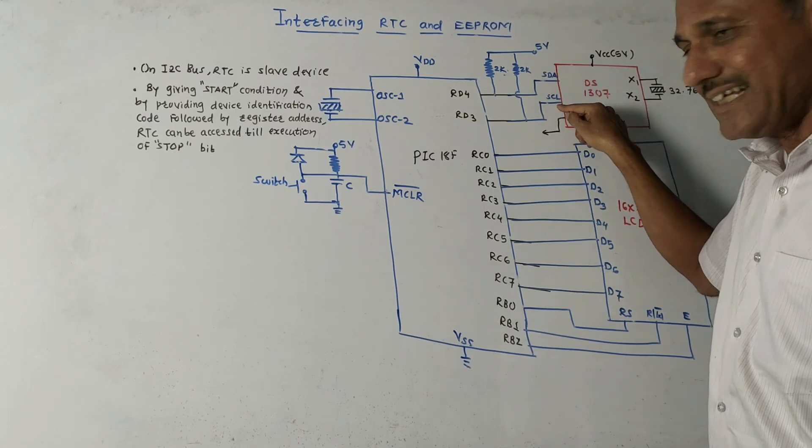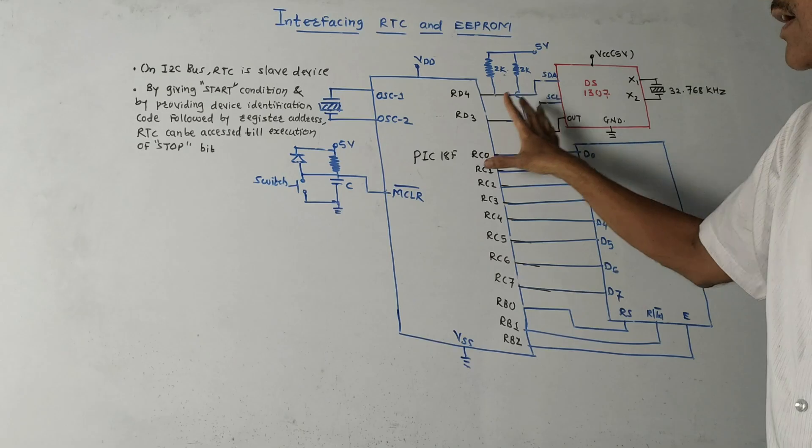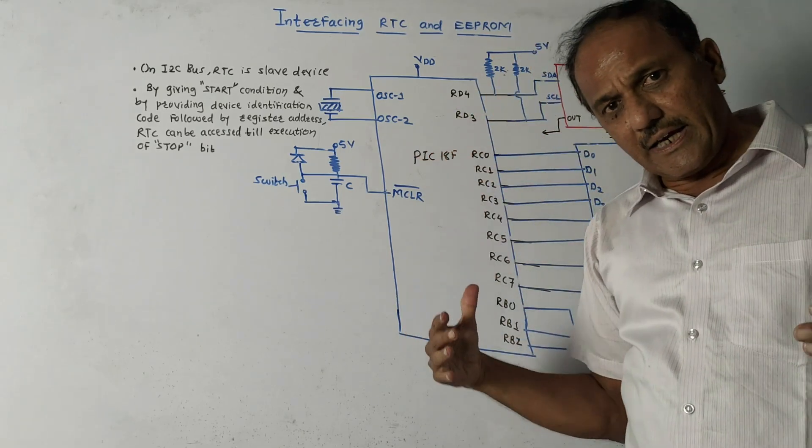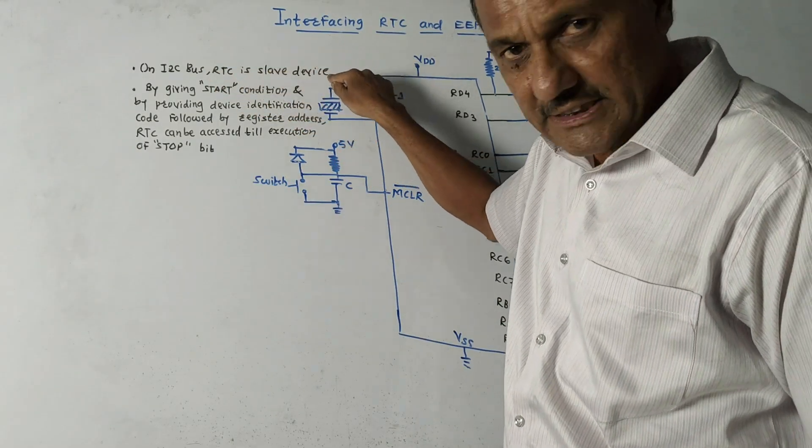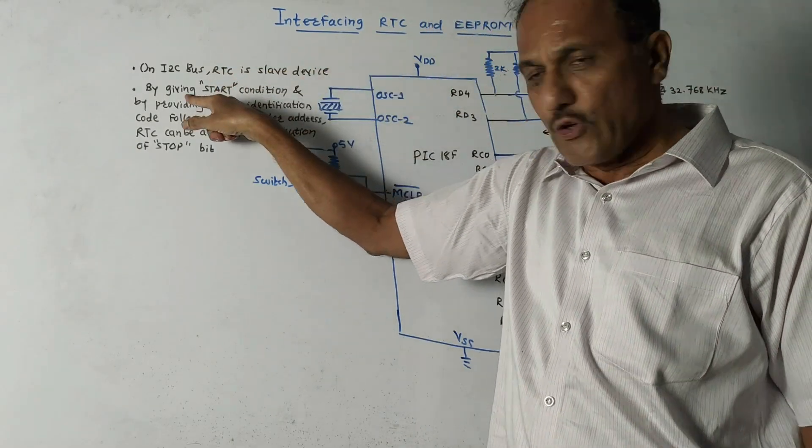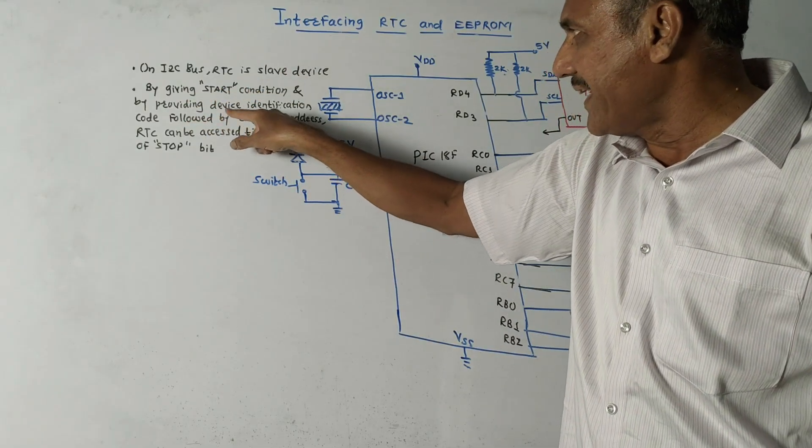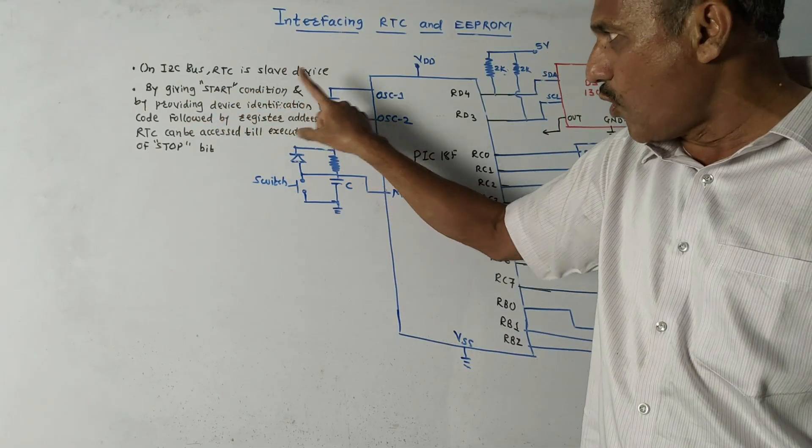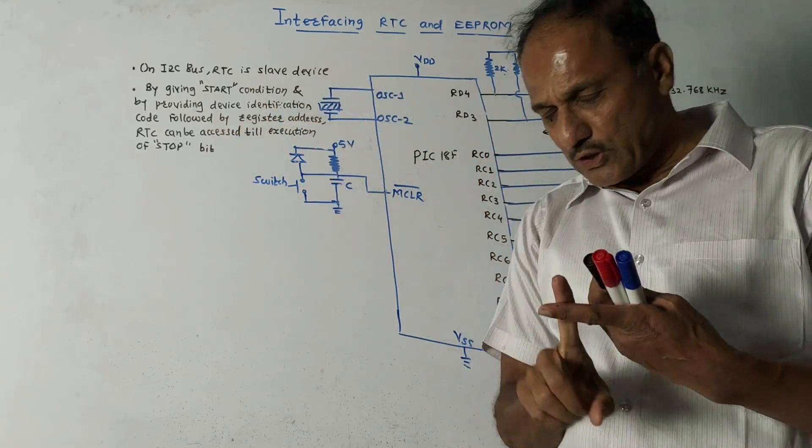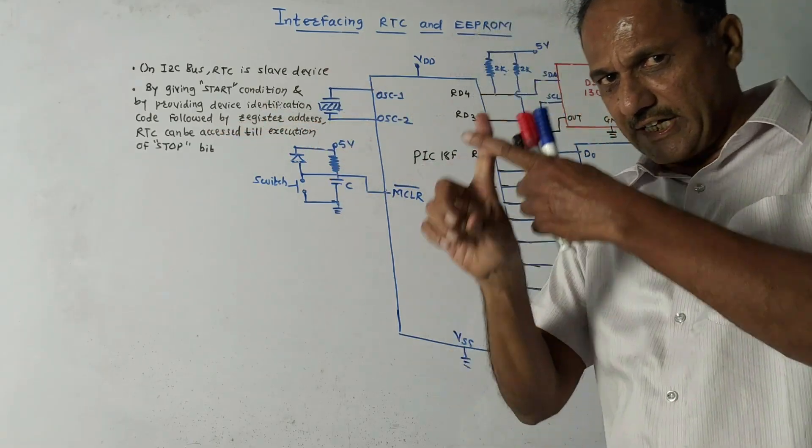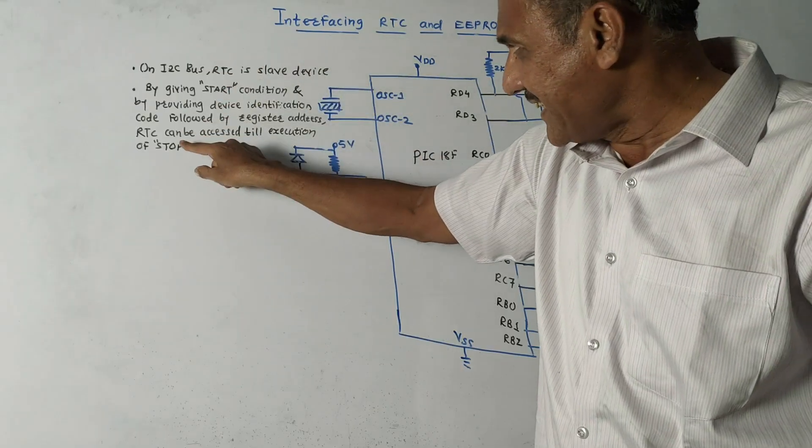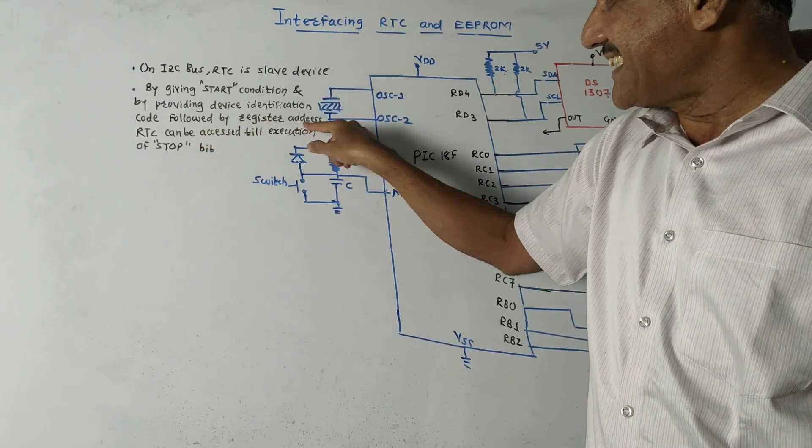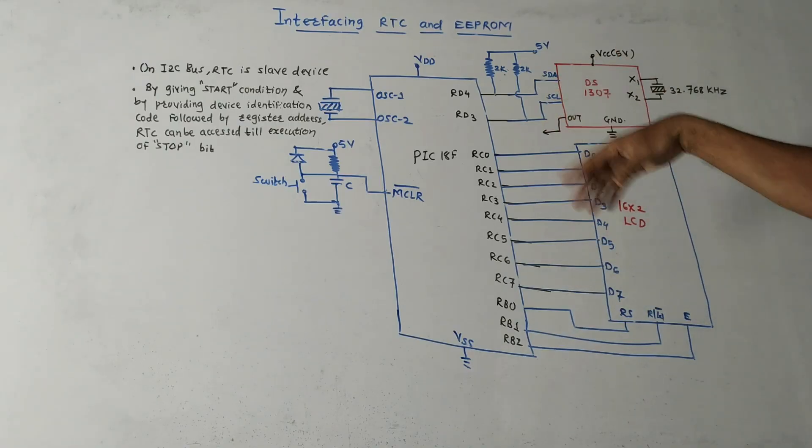We already learned the significance of SDA as well as serial clock when using it with I2C bus. In this case, RTC is acting as a slave device. We will use start condition and provide device identification code followed by register address. First we provide start condition, then identify the device followed by register address. RTC can be accessed till execution of stop bit.